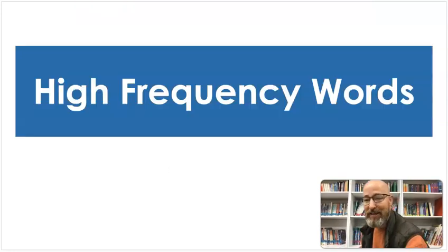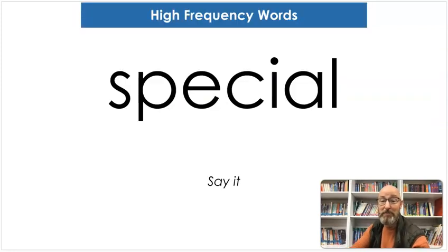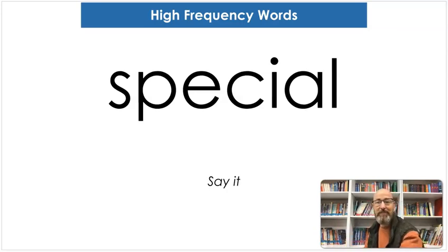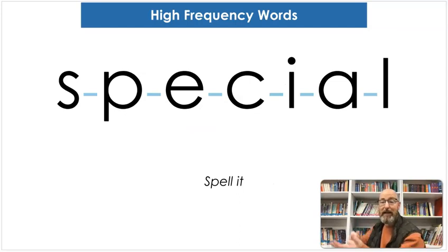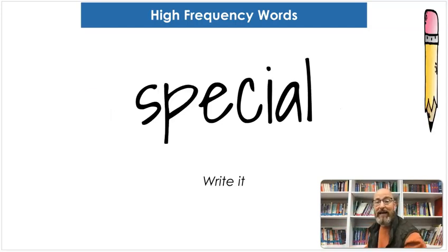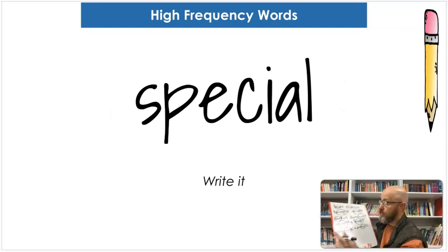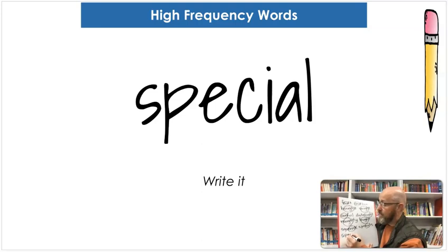Our next word is a high frequency word — no "aw" sounds this time. Our word is special. Say special. Map the sounds: S-P-E-SH-O-L. Special. Spell it: S-P-E-C-I-A-L. Special. And let's write it: S-P-E-C-I-A-L.